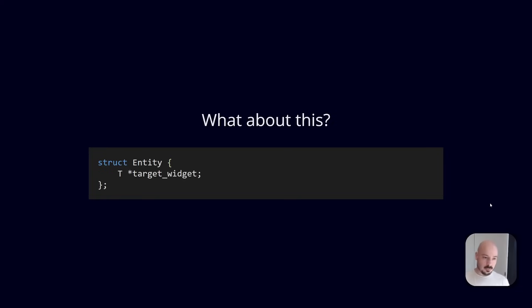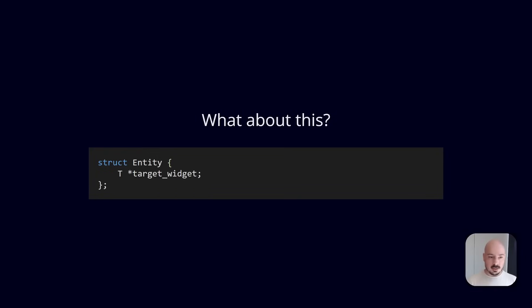So what happens if we have something like this in our program? We've got an entity, it's got a pointer to our widget type. What do we know about this? Nothing. We can't tell if the widgets are alive or dead, how long they're going to live, we can't tell if this pointer is valid. We have no idea because there's no context.